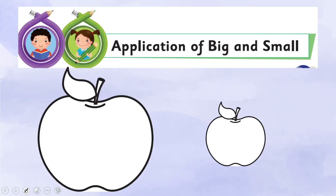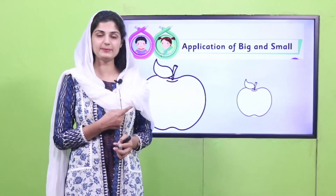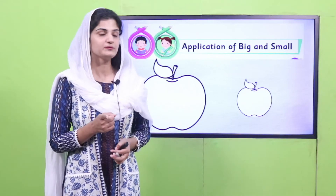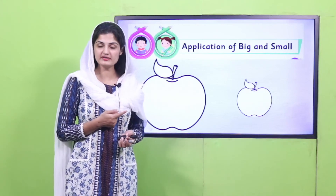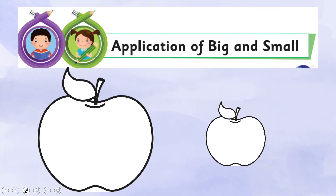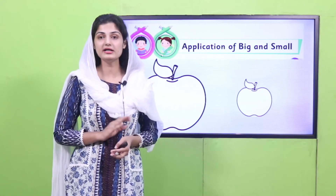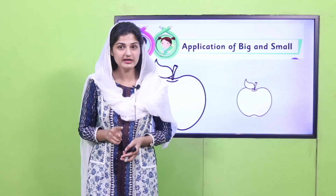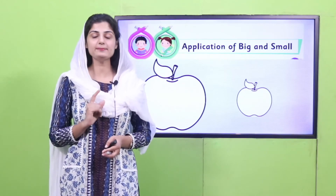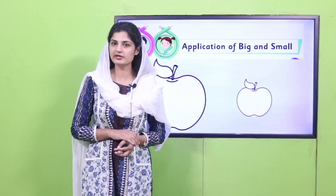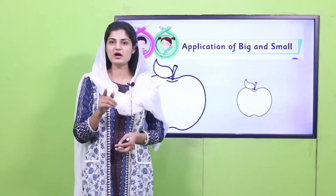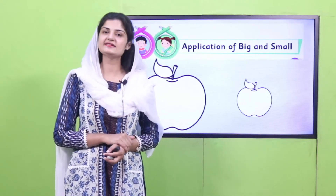Now it is time for the application of big and small. Hopefully you have your red color with you. Look at the pictures on the page already opened in your book. You need to see the size of both apples — which is big and which is small — and then color the big apple red. Grab the red color, pause your video here, color the big apple, and then come back.